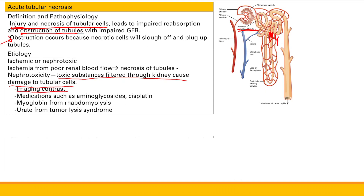Medications like aminoglycosides and cisplatin can cause acute tubular necrosis. The last two causes are rhabdomyolysis and tumor lysis syndrome, which produce extra toxins like myoglobin and urate that are harmful to kidney cells. So to summarize: imaging contrast, medications, rhabdomyolysis, and tumor lysis syndrome.